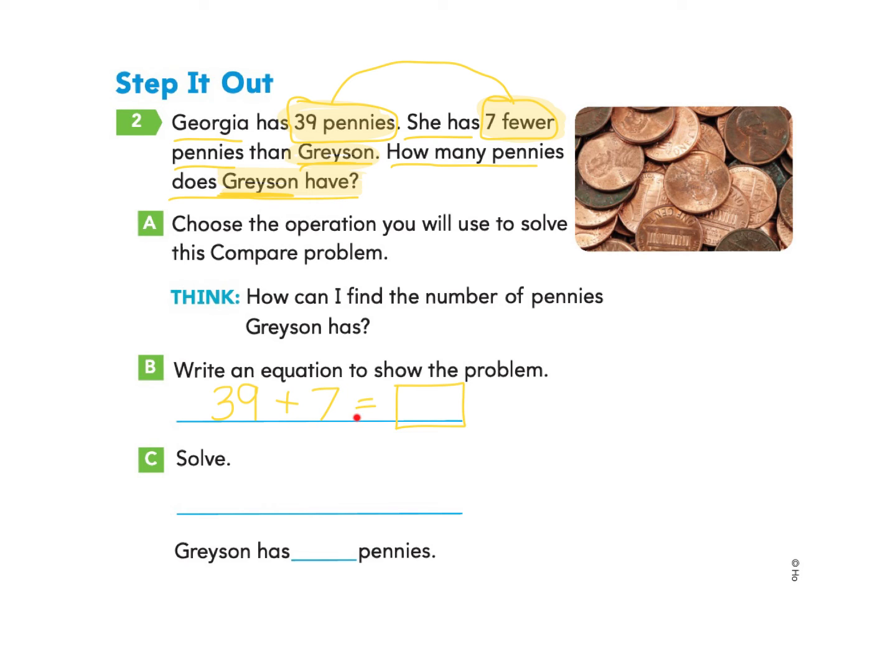39 plus seven equals, maybe you'd like to pause this video and try this on your own, or you can follow along with me. We have 39 plus seven. I add the ones column, nine plus seven, and I get 16. So I write six in the ones column and put the other 10 in the tens column. Now I add one plus three and I get four. So I get 39 plus seven equals 46.